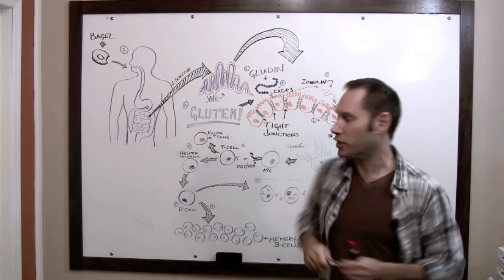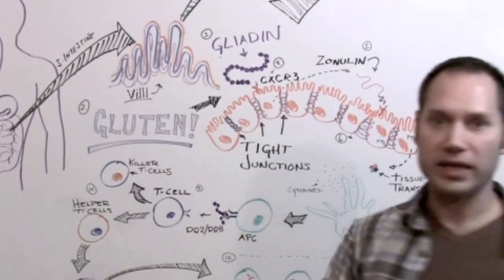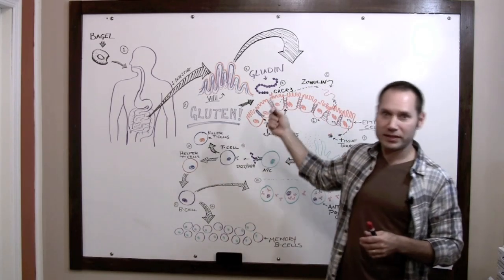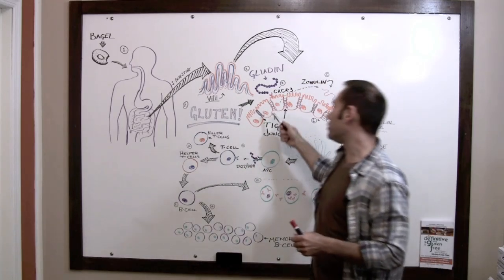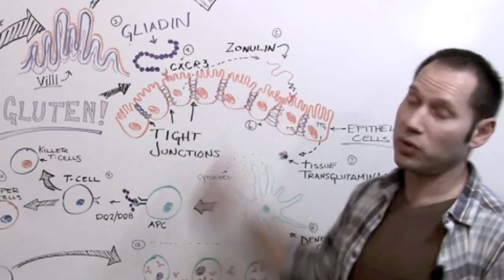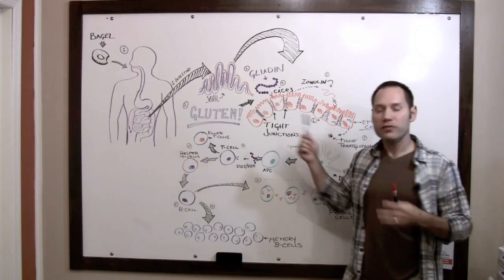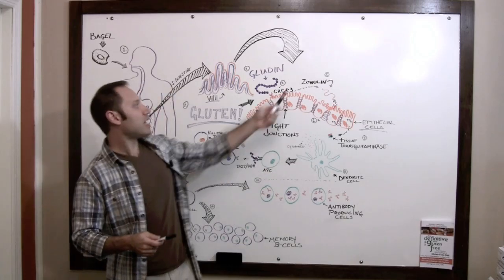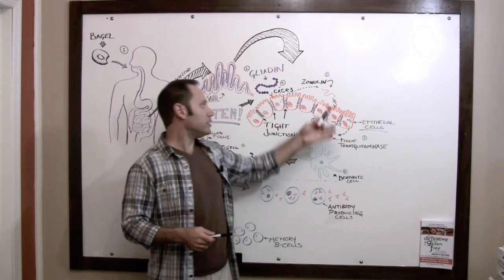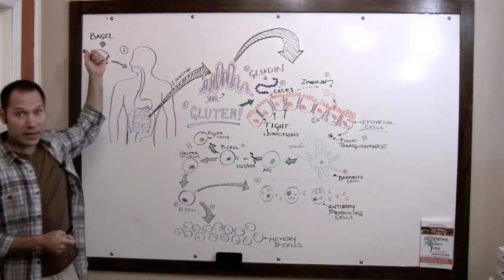So what this undigested protein is going to do — it's going to interact with a receptor on the cell called CXCR3. What that CXCR3 receptor is going to do is send a signal down into the cell and cause it to produce another protein called zonulin. Zonulin is a protein that regulates the permeability of these tight junctions. So now you've got all this zonulin loaded around the small intestine, and what zonulin is going to do is interact with some other receptors in the gut and start to cause the degradation of those tight junctions — opening up the doorway between the outside and the inside.